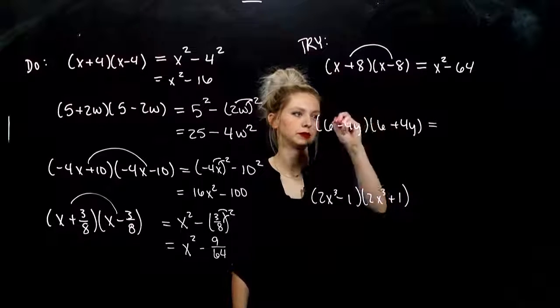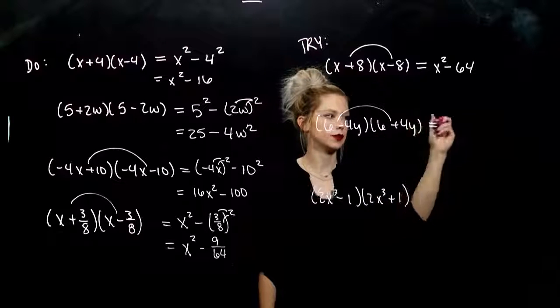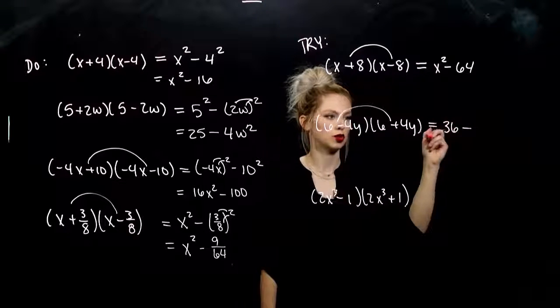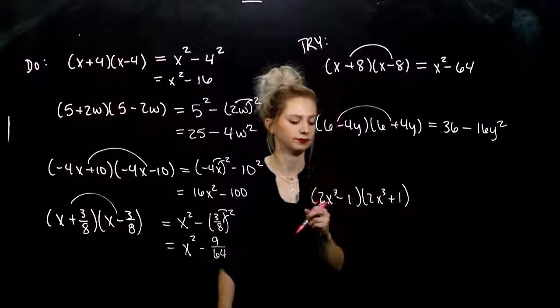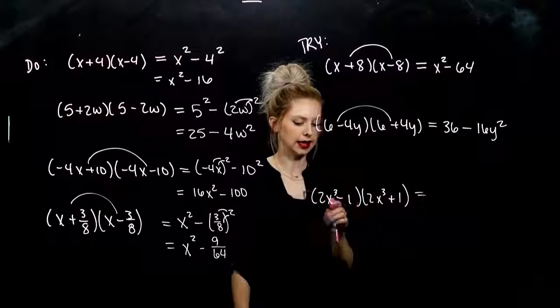Okay? Same, same, different sign. Take the first one and square it. Subtract off the last one squared. So, 16y squared minus 1.